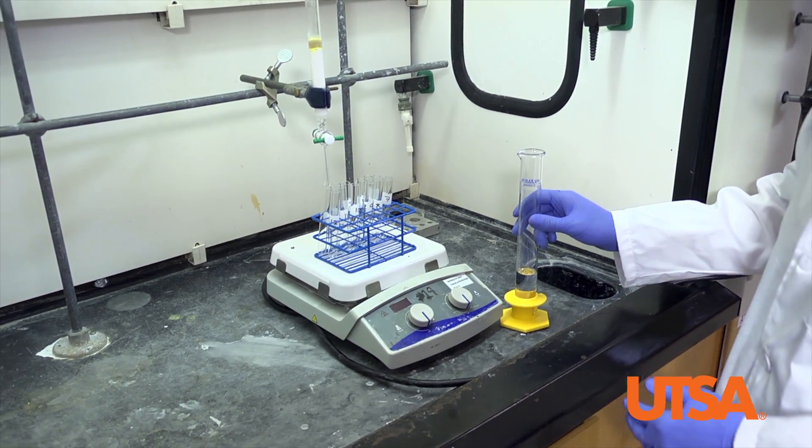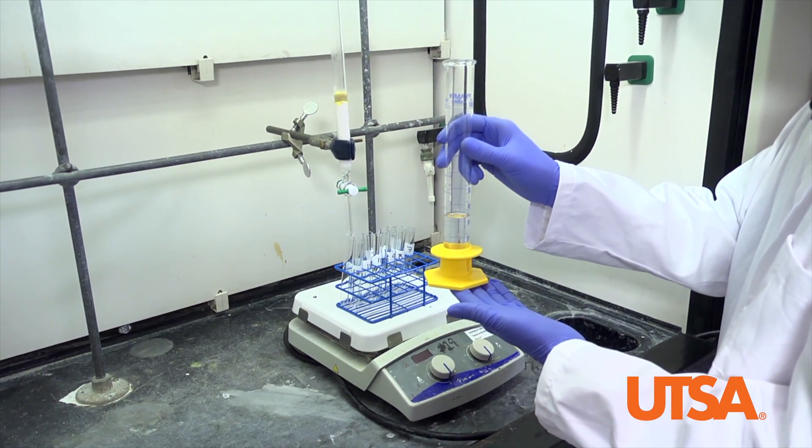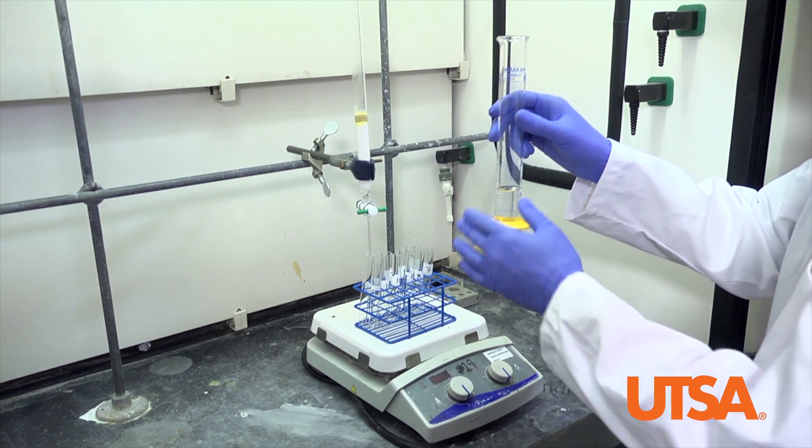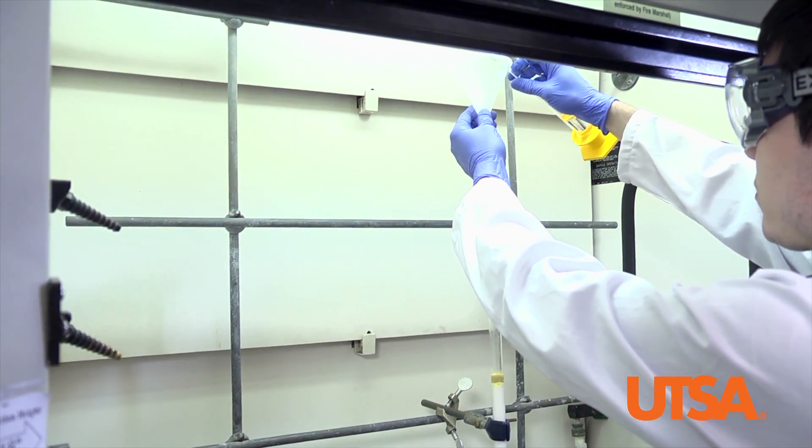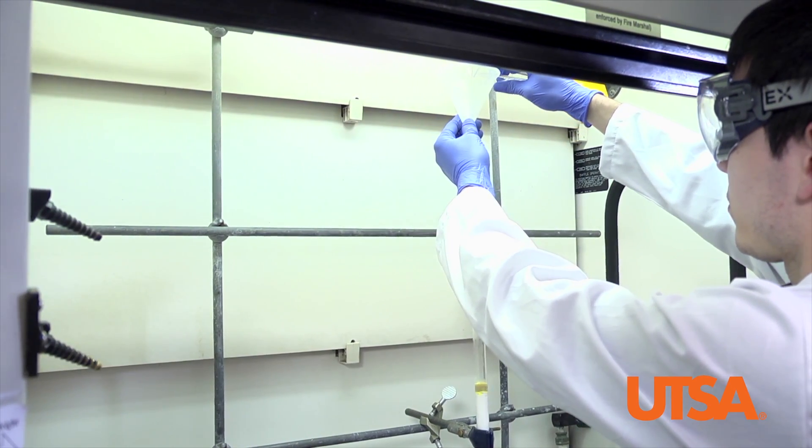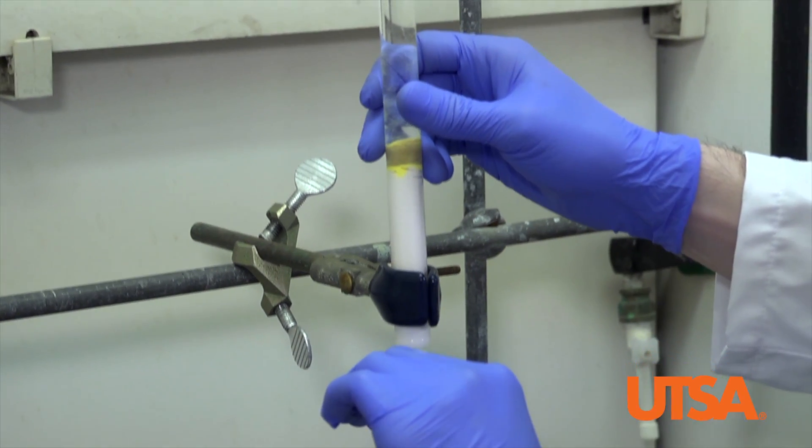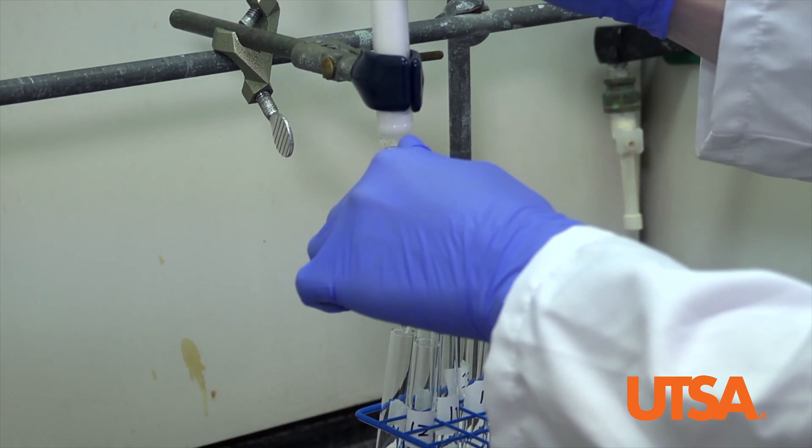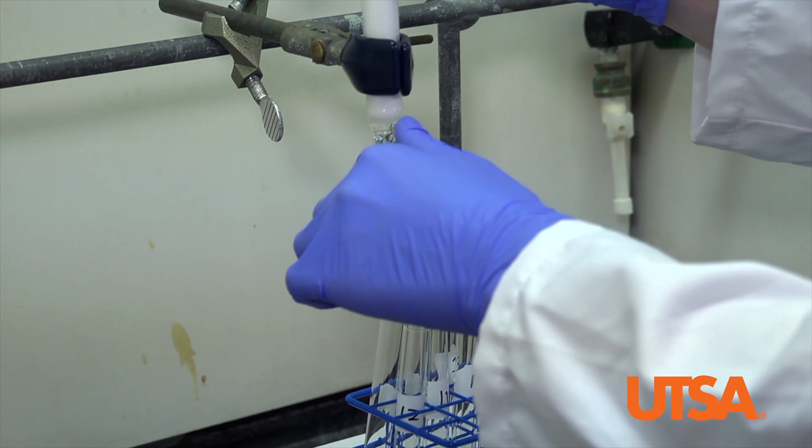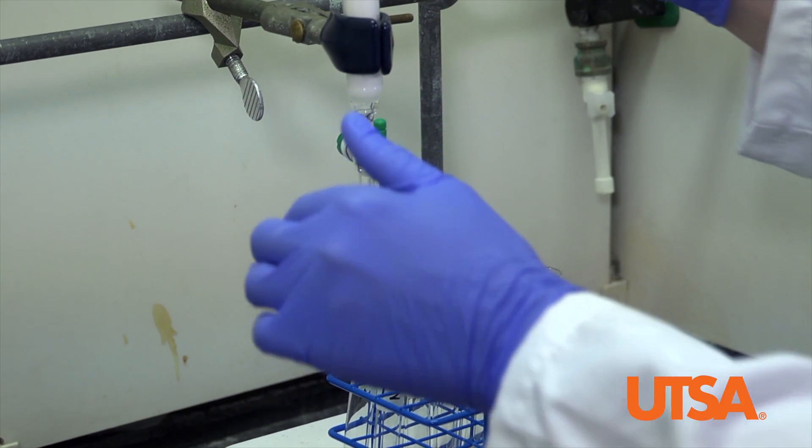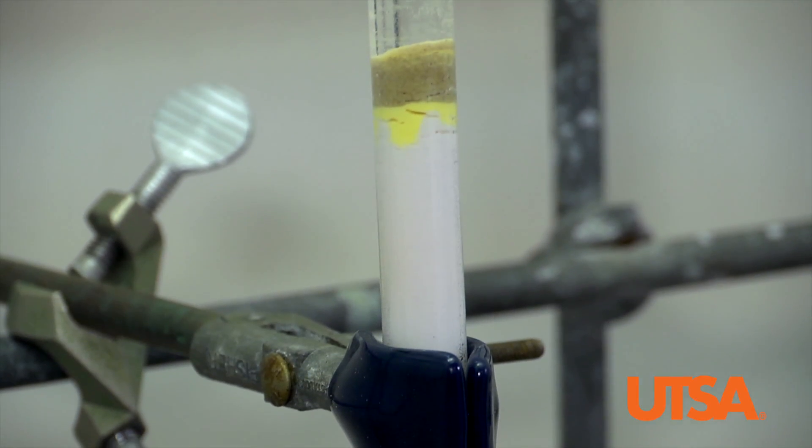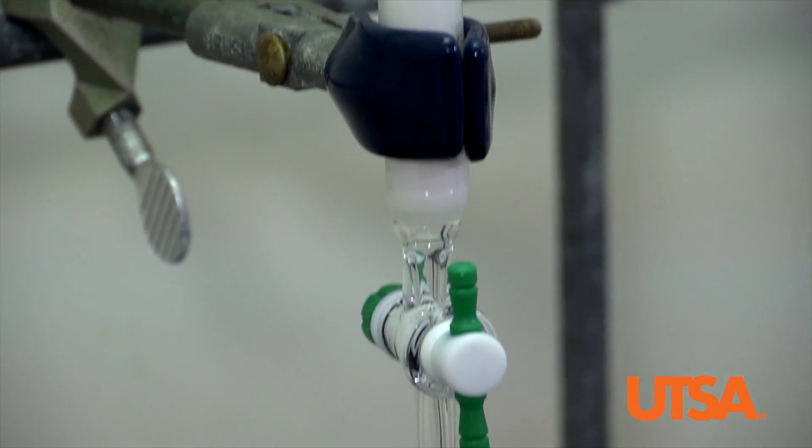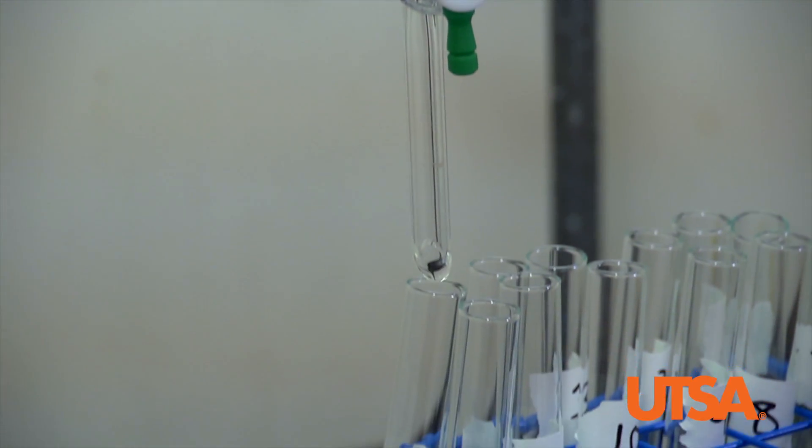Proceed by adding 35 milliliters of fresh petroleum ether to your column. Open the stopcock and collect 10 to 12 fractions of 5 milliliters each. Make sure that your tubes are labeled. 5 milliliters is approximately half of the volume of each tube.